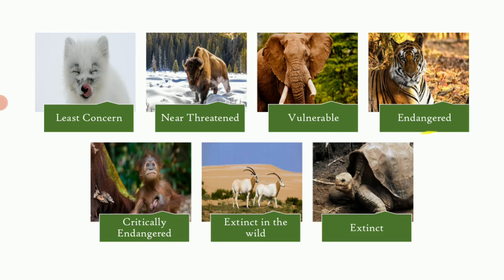The fourth category is 'endangered,' abbreviated as EN. Shown here is a Bengal tiger, and many other animals fall under this category. These are species which have a very high risk of extinction in the wild — they will very soon be completely removed or extinct from wilderness areas. Another example of an endangered animal is the chimpanzee.